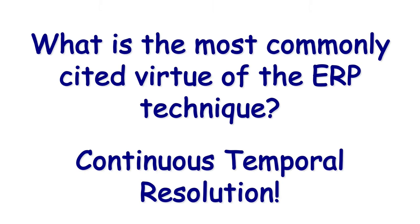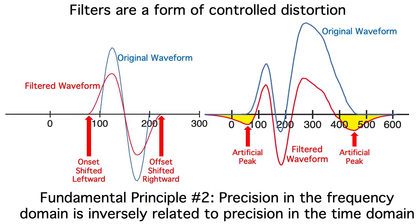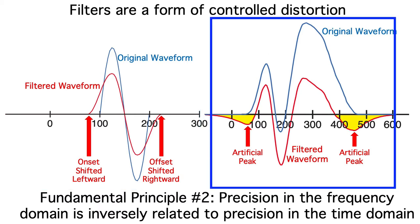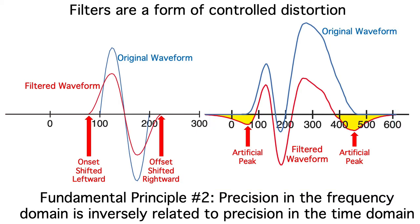And isn't temporal resolution one of the greatest virtues of the ERP technique? But even more importantly, heavy filtering can produce problematic distortions. Low-pass filters tend to distort the onset and offset time of the ERPs. Extreme high-pass filters can cause artificial peaks to appear in the waveforms. But some filtering is necessary.